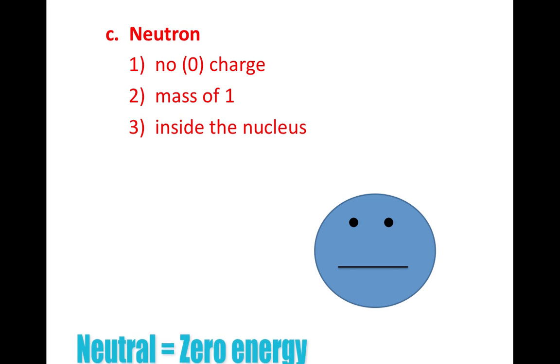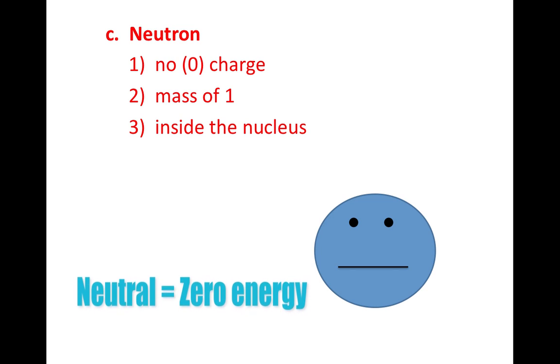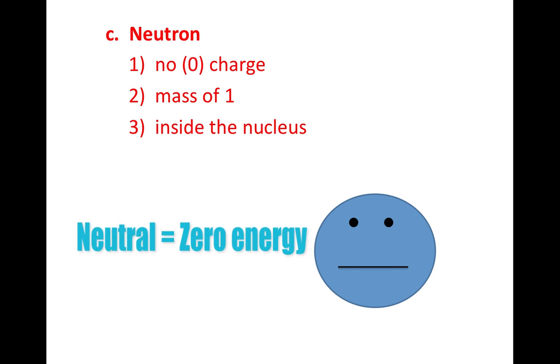Let's move on to my last one. We've got electrons, protons, and our neutral particle here. Not happy, not sad, because that's our neutron. No charge, mass of one just like our proton, and it's found inside the nucleus as well, just like our proton. So neutral, zero energy.